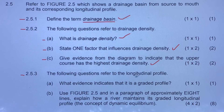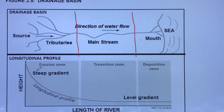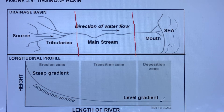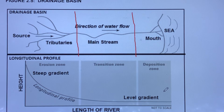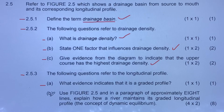Question 2.5.3a: What evidence indicates that the longitudinal profile is a graded profile? It is a graded profile because of the concave shape — you can clearly see the concave shape. This means the river is well graded; in other words, there are no rapids or waterfalls, meaning the profile is not uneven.